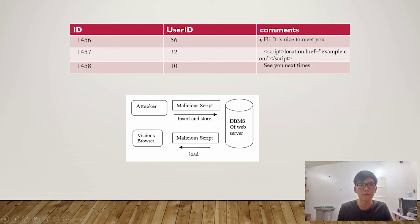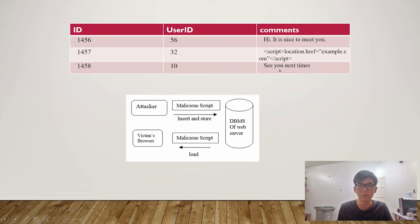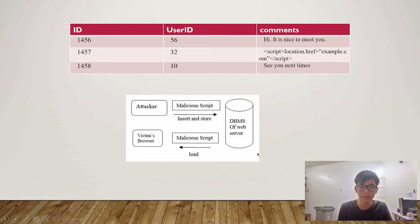In ID 1456, the comment is normal — just 'Hi, nice to meet you.' But in ID 1457, there is a JavaScript script. The function of this script is to redirect using location.href to example.com when the user loads that particular record. So the attacker inserts and stores the malicious script into the database, and it loads in the user's browser when they access that record.